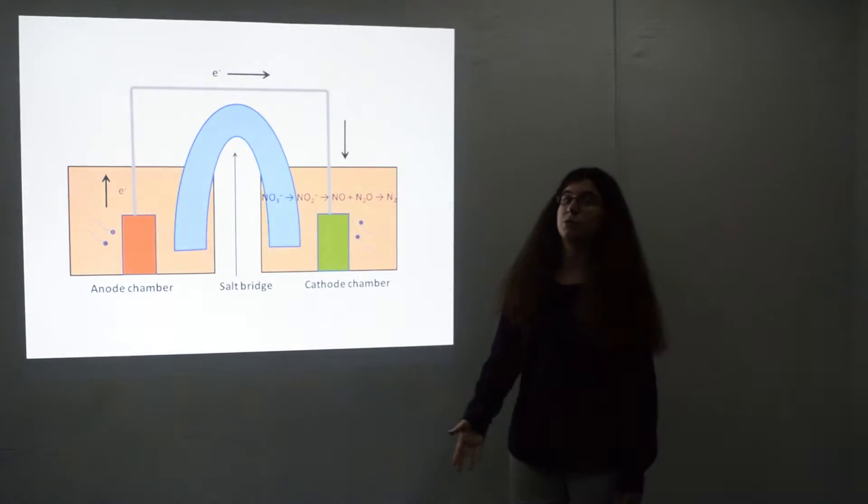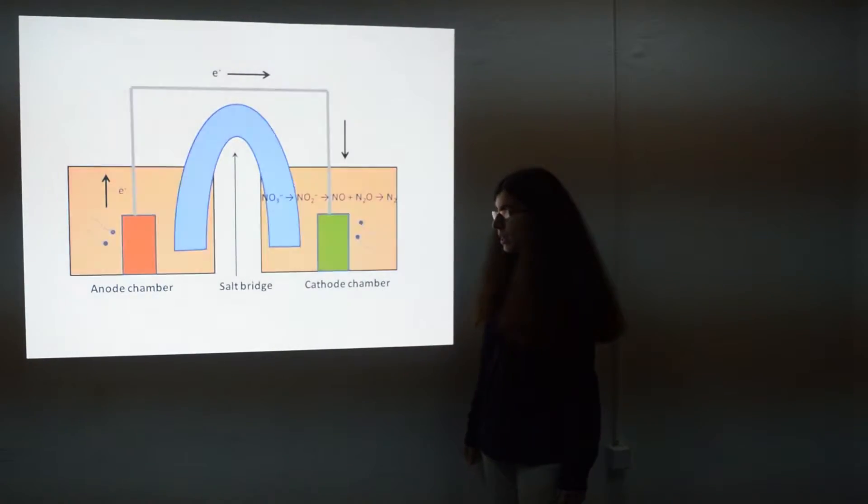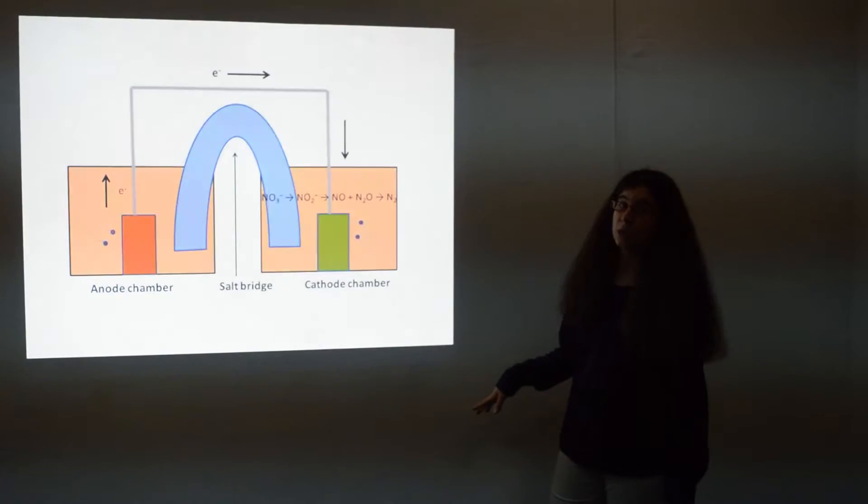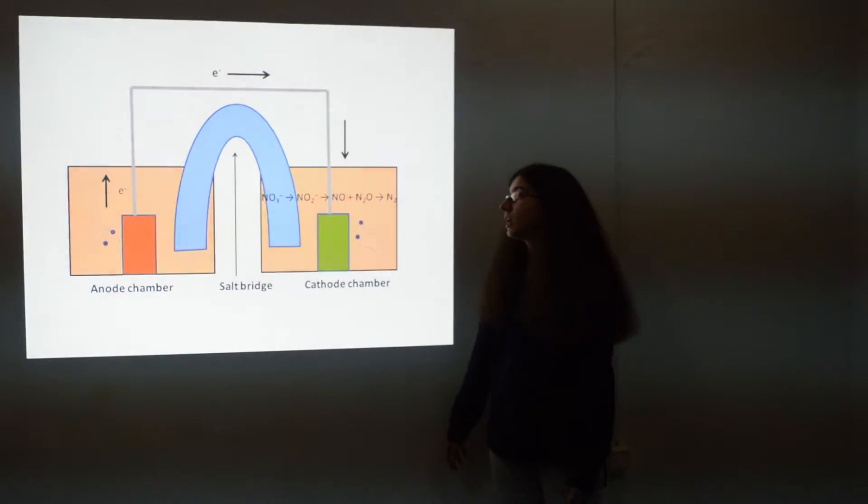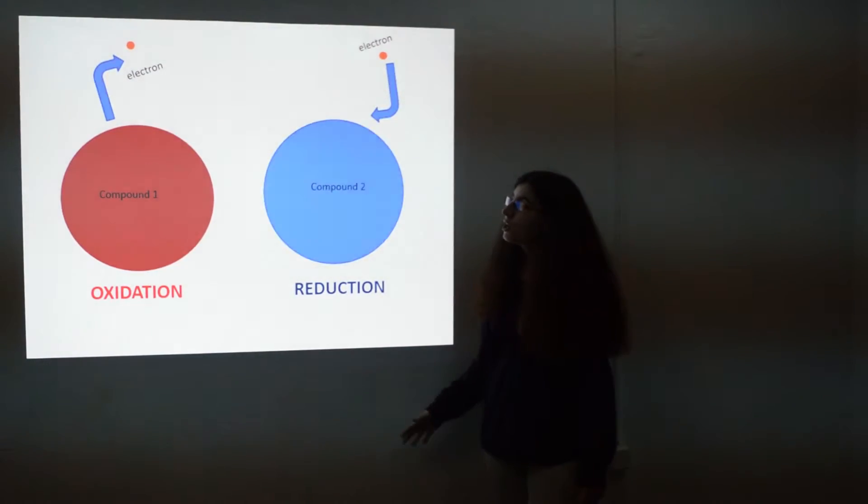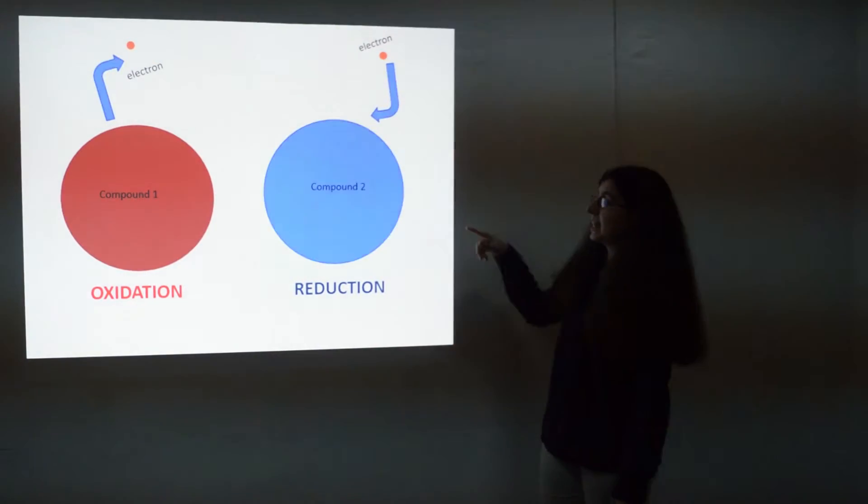Logically, we have bacteria in both of our chambers. In the first one we have bacteria that is helping oxidation of matter, of compounds found there. And in the second one we have bacteria that is helping reduction of compounds. So, oxidation is a process where compound releases one electron and reduction when it gets one.